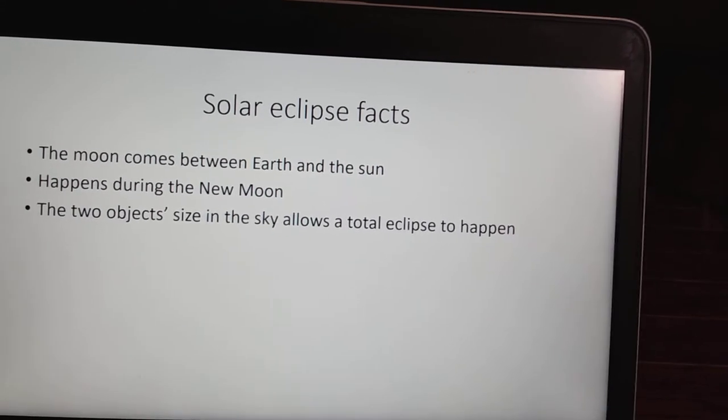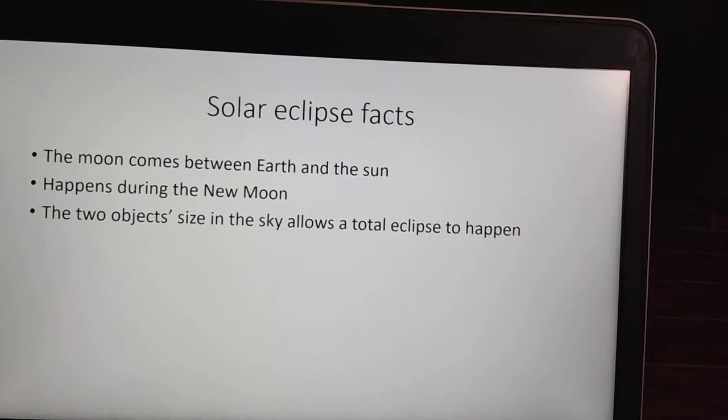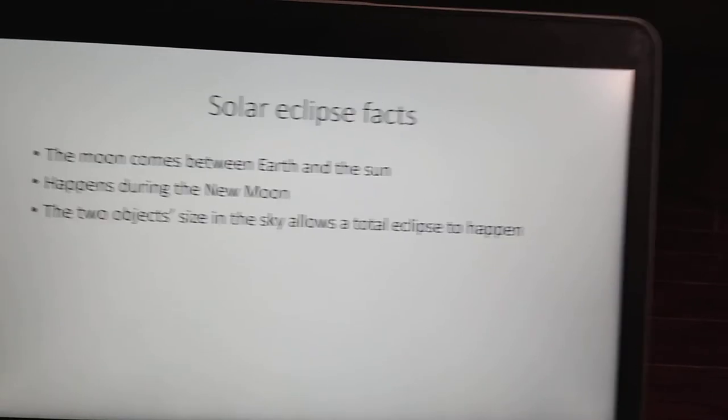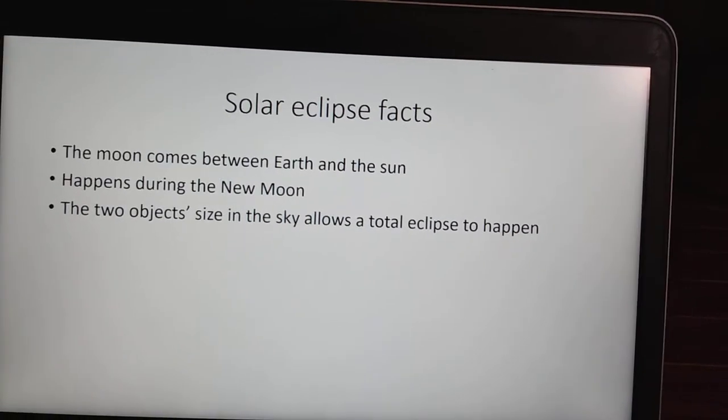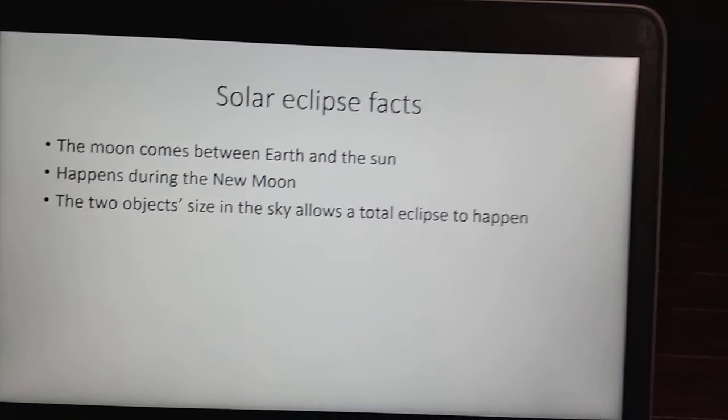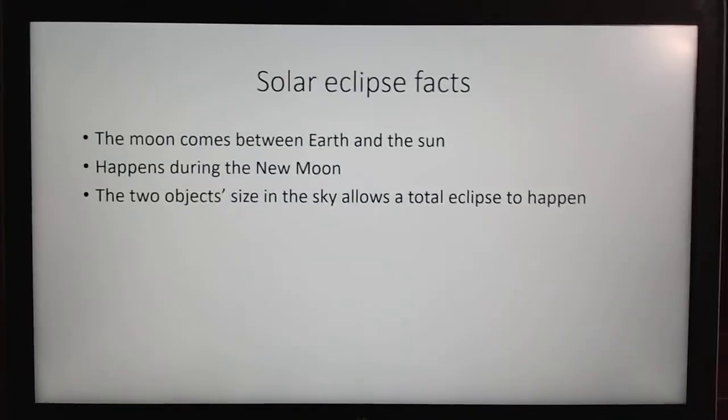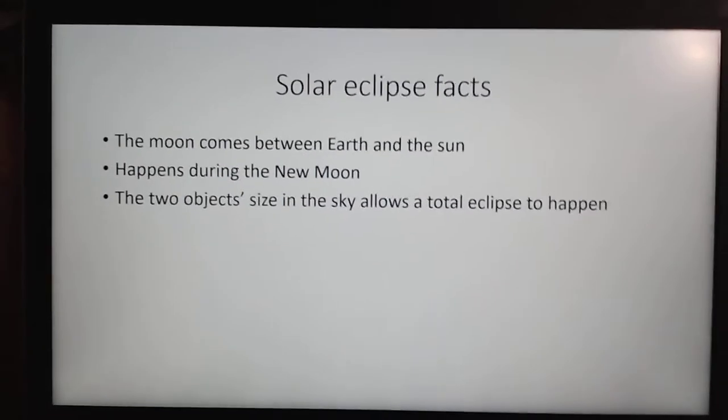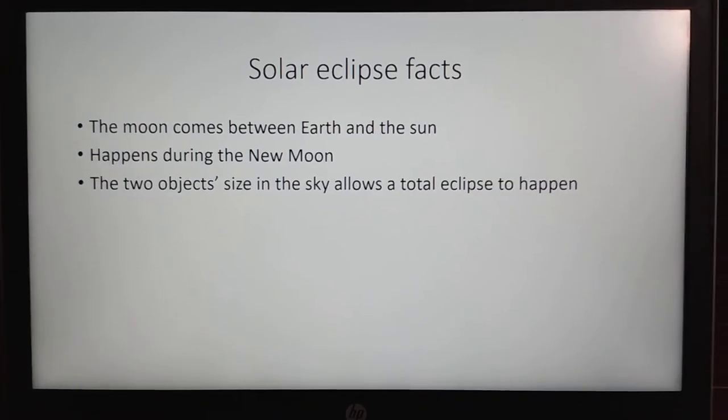And the two objects in the sky allow the total eclipse to happen. What do I mean by that? Well, I'm sure a lot of you know that the sun is actually 400 times bigger than the moon.